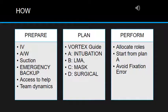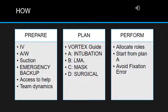The plan should be A, B, C, and D: intubation, LMA or supraglottic devices, face mask, and finally the surgical plan. We should discuss all these steps with the team and allocate roles — for instance, who is giving the tube, who is giving the bougie, and who is giving cricoid pressure in case of rapid sequence induction. Then we start with plan A, which is intubation.